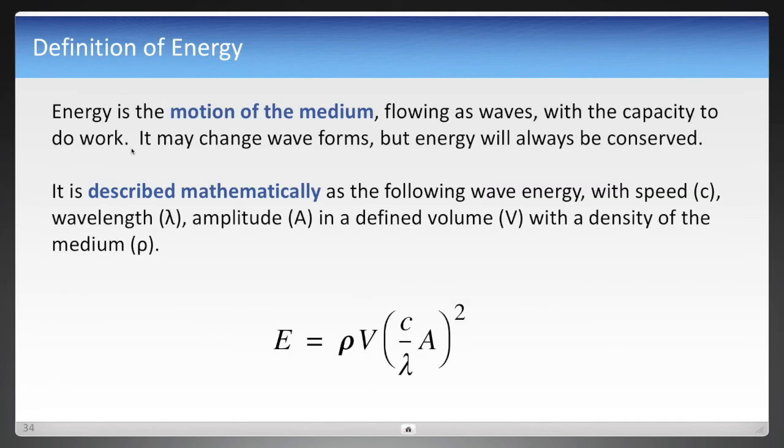And so that becomes our definition now of energy. Energy is the motion of the medium, just like the waves flowing in the pool. And it has the capacity to do work. Now, because it flows as waves, it may change waveforms. But again, energy will always be conserved. And mathematically, it's described in the equation below. Wave energy has a wave with a speed, a wavelength, amplitude, and it's measured in a defined volume with a medium of a known density. And that's it. That is the definition we'll use for energy.